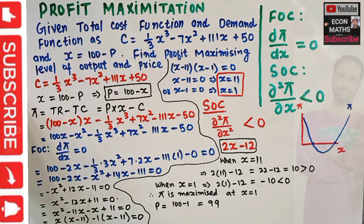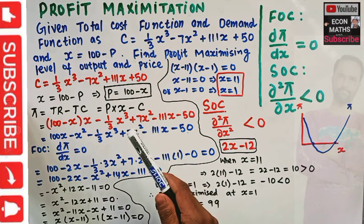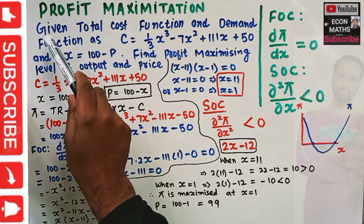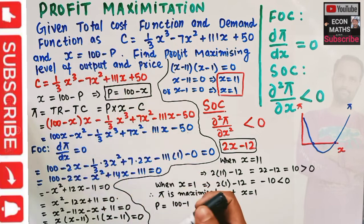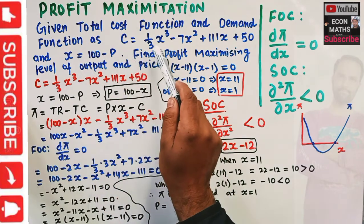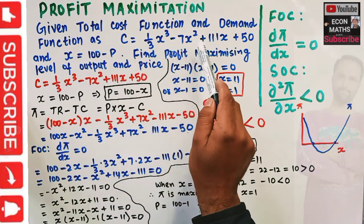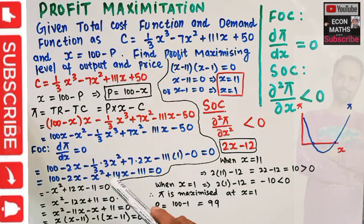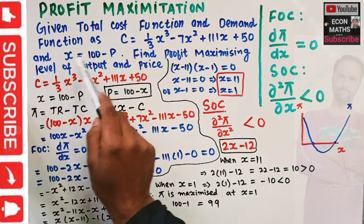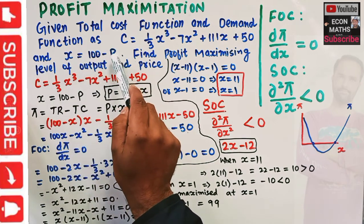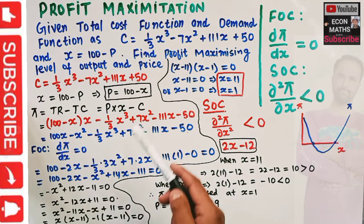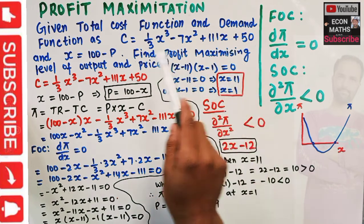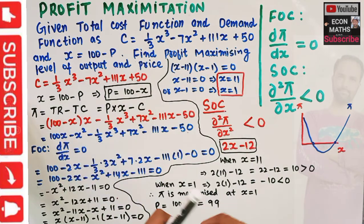In this video we will learn how to find the profit maximizing level of output and price from a given cost function and demand function. The question gives us: total cost function C = (1/3)X³ - 7X² + 111X + 50, where X denotes output and C denotes total cost, and demand function X = 100 - P, where P is the price. We have to find the profit maximizing level of output and price.